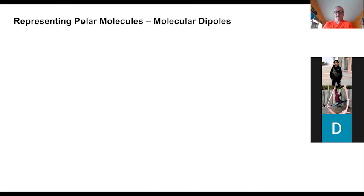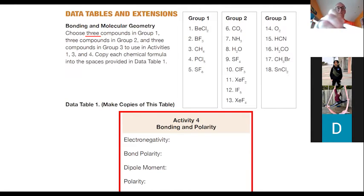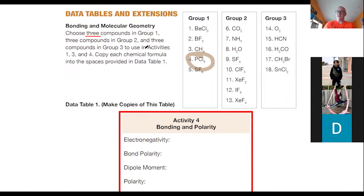So let's go back for a second. This is the last of the activities for today — basically looking at the combination of polarity and shape. In activity four, you'll be taking three of these compounds, the same ones from the group we dealt with before. So you do three from group one, three from group two, and three from group three. You don't have to choose the same three compounds — you can choose three different ones. For instance, if we looked at PCl5, what you want to do is find the electronegativity of those bonds.